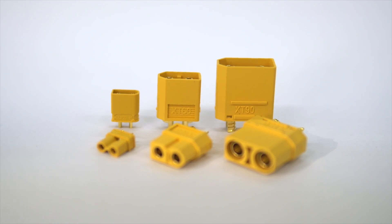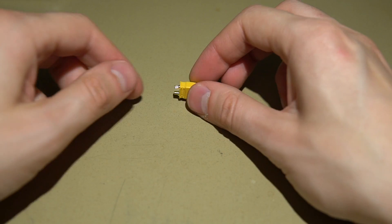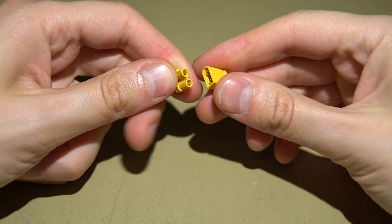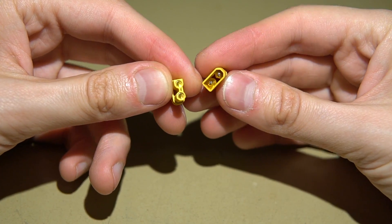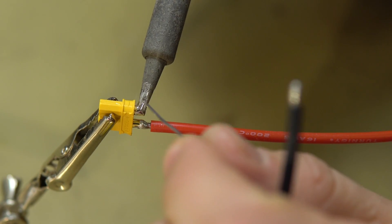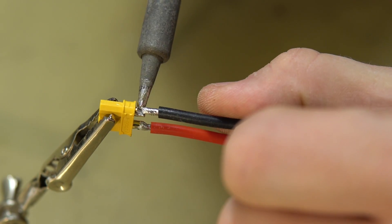The XT30 shares the same design as the other AMASS connectors. The cylindrical brass contacts hold the two pieces very strongly together, while the solder cups at the back allow you to easily make a very good electrical connection.